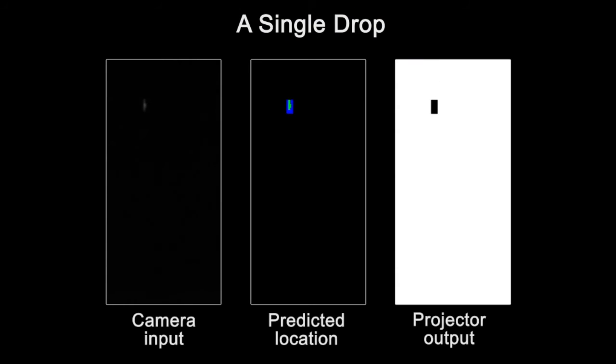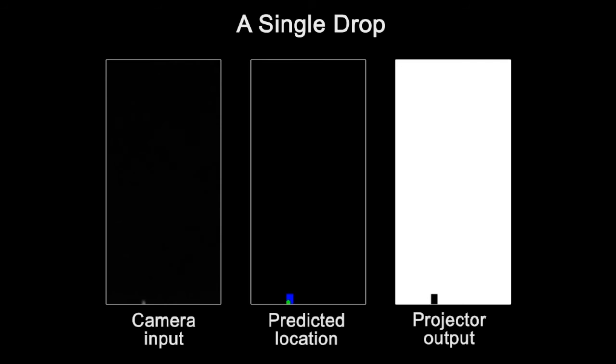This video shows how the system operates on a single drop. The camera input is fed into our system, which predicts the future location of the drop and directs the projector to not illuminate it. For the predicted location video, the color red indicates the parts of the drop that are incorrectly illuminated, green indicates the parts of the drop that are correctly not illuminated, and blue indicates pixels that were incorrectly turned off.